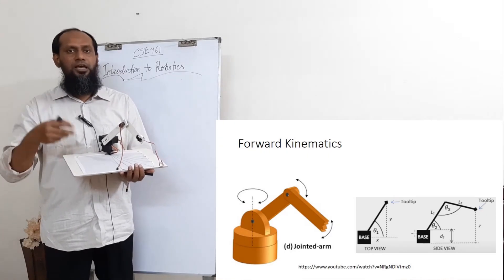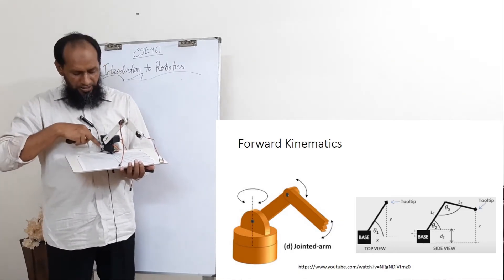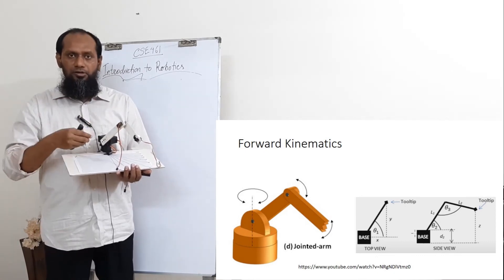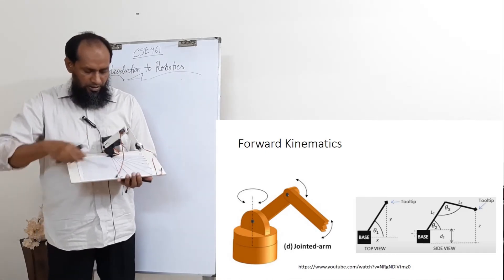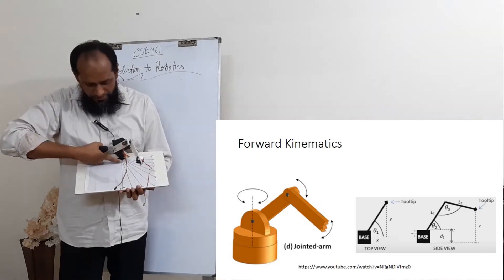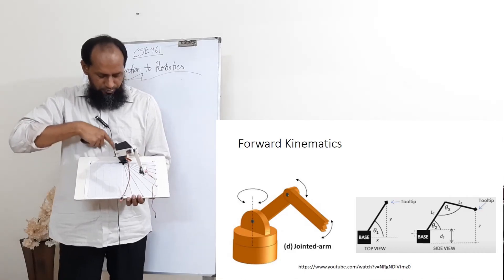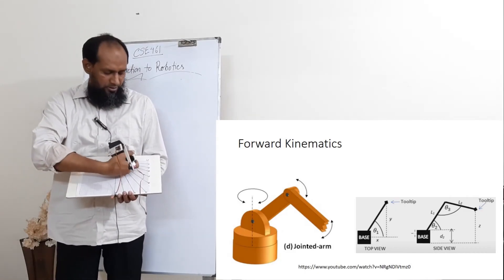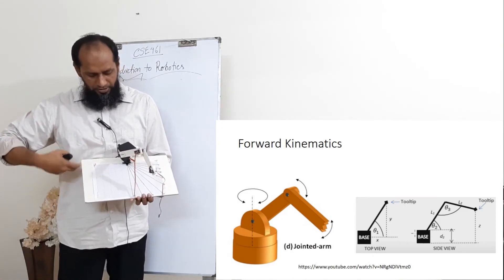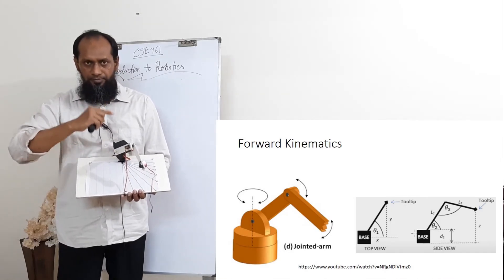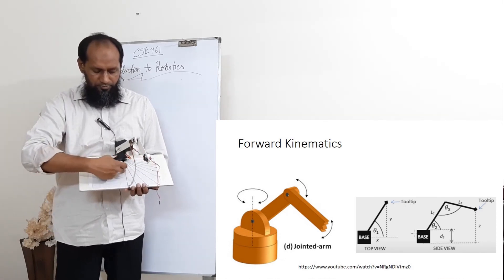In today's session we are going to show you the calculation: how to calculate the position XYZ from the degree values, and how to calculate the degree values from XYZ. For this manipulator, this direction is X, behind is minus X, this direction is Y, the opposite is minus Y, and the height is Z.